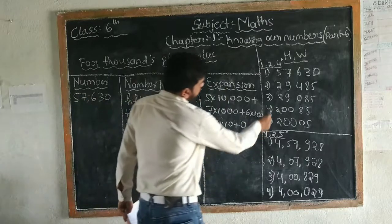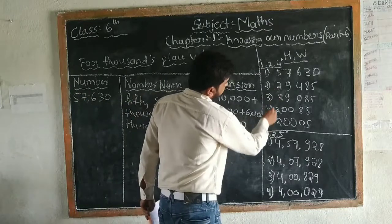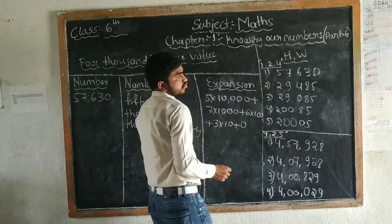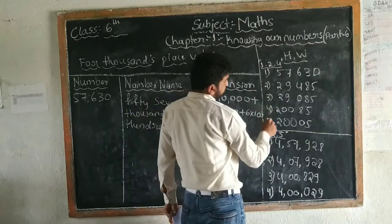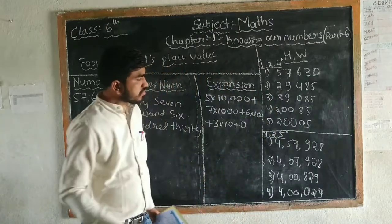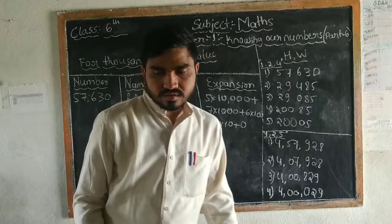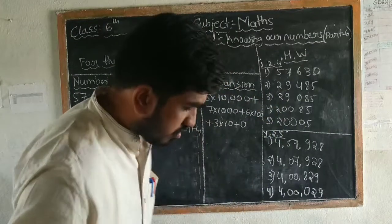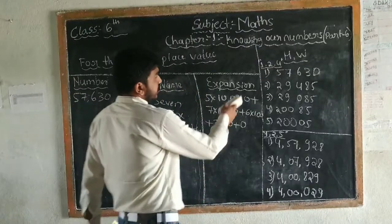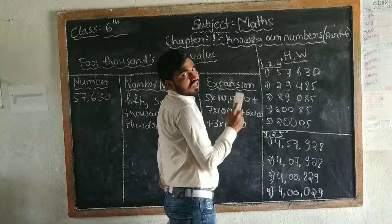We have to do all of them. These are all 5-digit numbers, which are 10,000. We have to write them in the exercise only.